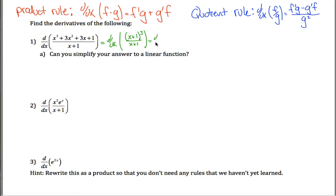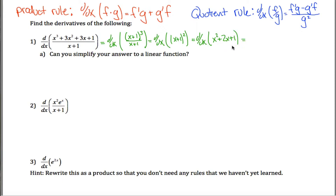So before I've done any calculus, I can cancel out one of the x plus 1 factors, and the question really becomes: what is the derivative of x plus 1 squared? You could foil it out to get x squared plus 2x plus 1, then take the derivative of each part individually using the power rule. You get 2x plus 2 plus 0, so the solution is just 2x plus 2.